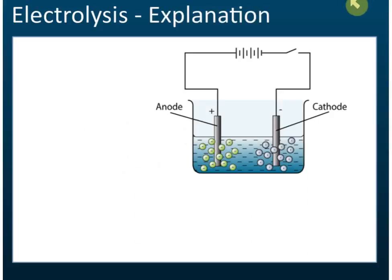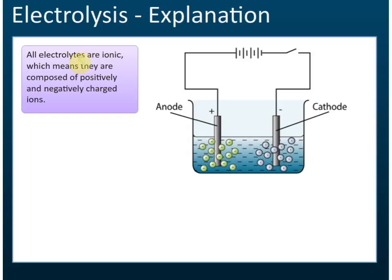Explanation of why electrolysis occurs — why electrolysis occurs when there is a current flow through. First of all, electrolytes are ionic, so there are a lot of positive and negative ions in an electrolyte. They are composed of positively and negatively charged ions, so inside an electrolyte, there are positive and negatively charged ions.